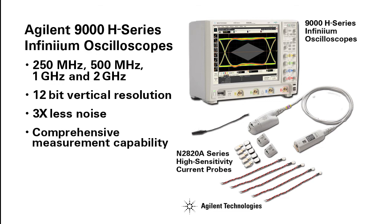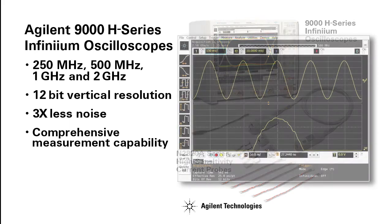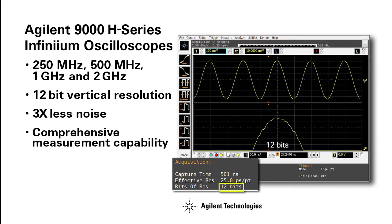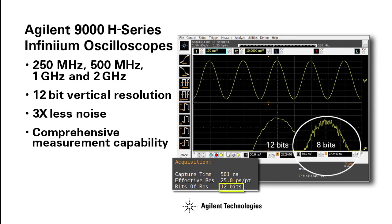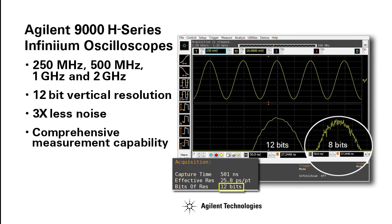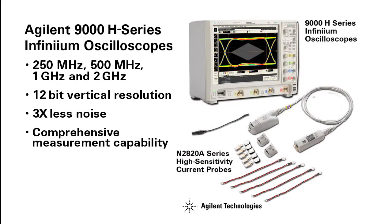The 9000H series has a 12-bit vertical resolution and reduces noise by three times compared to the noise inherent in traditional 8-bit oscilloscopes. This enables precision signal viewing, even for small signals.